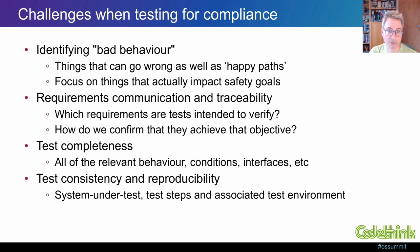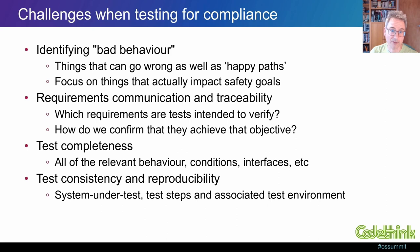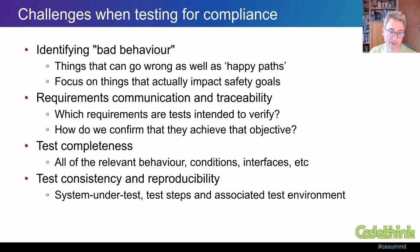Do the tests cover all of the required behaviour, conditions, and interfaces? Does the test implementation actually verify the criteria expressed in the requirement? If the original requirement is at a high level, how has it been broken down into more detailed criteria that we can verify? Accomplishing all of these things is hard enough, but we also need our test results to be consistent and reproducible, which can be particularly hard for system-level tests. Automation can obviously help to achieve this by ensuring that test steps, at least, are reproducible. But we also need a way to reliably reproduce the system that we're testing, as well as our test implementations and the environment within which they execute.